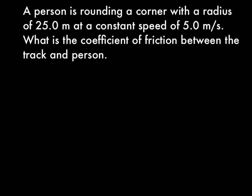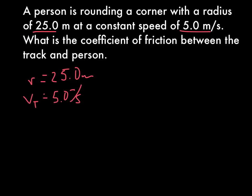Now we're going to work on some centripetal acceleration problems. A person rounding a corner with a radius of 25 meters — r equals 25.0 meters — at a speed, the tangential velocity, equals 5.0 meters per second. We're asking for the coefficient of friction, so mu equals... we'll figure that out.